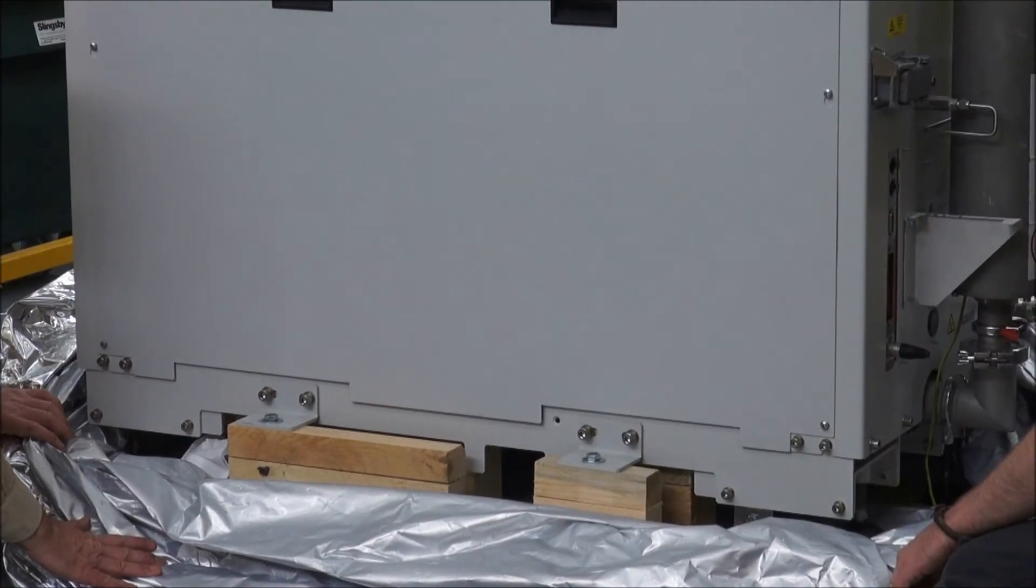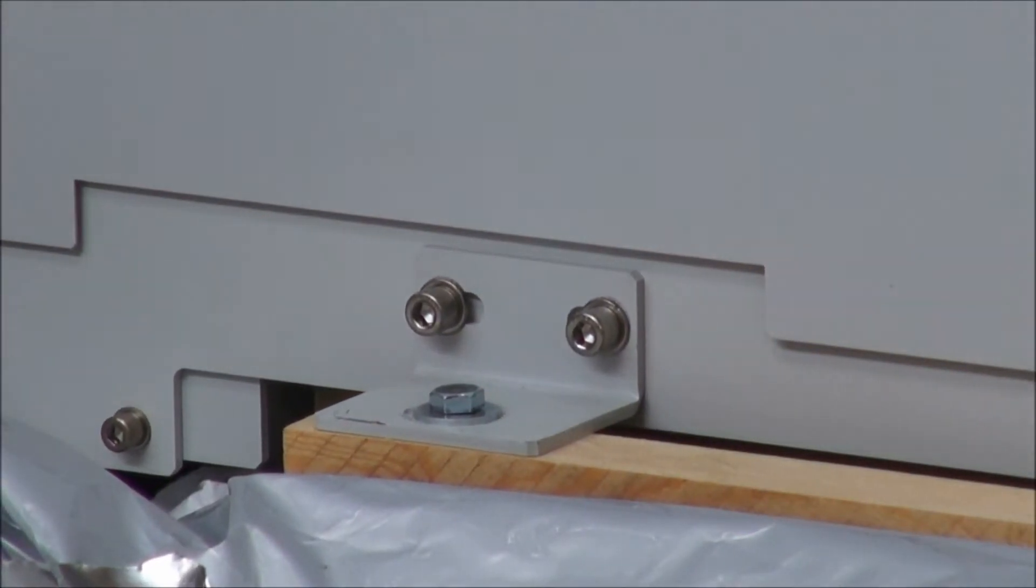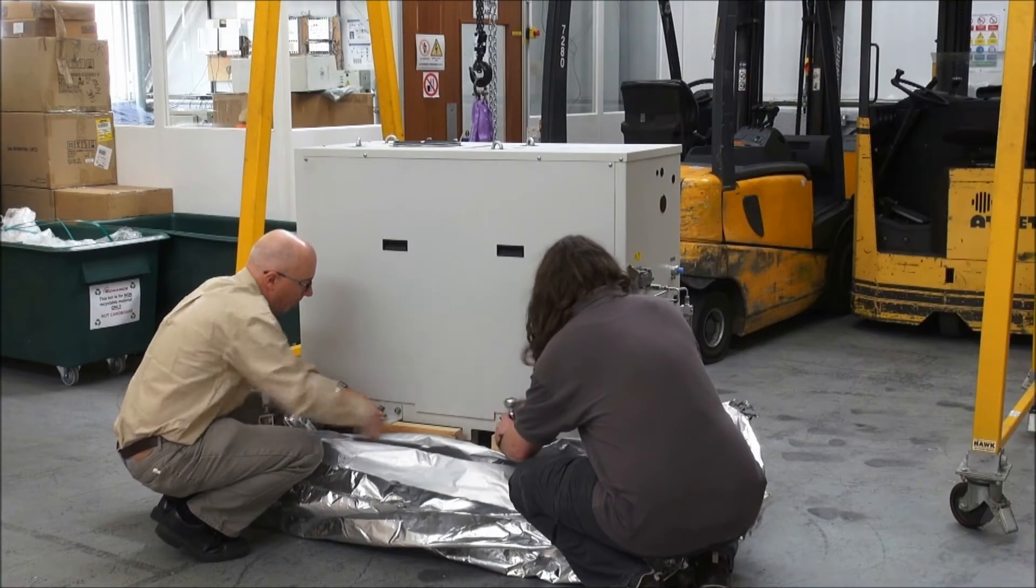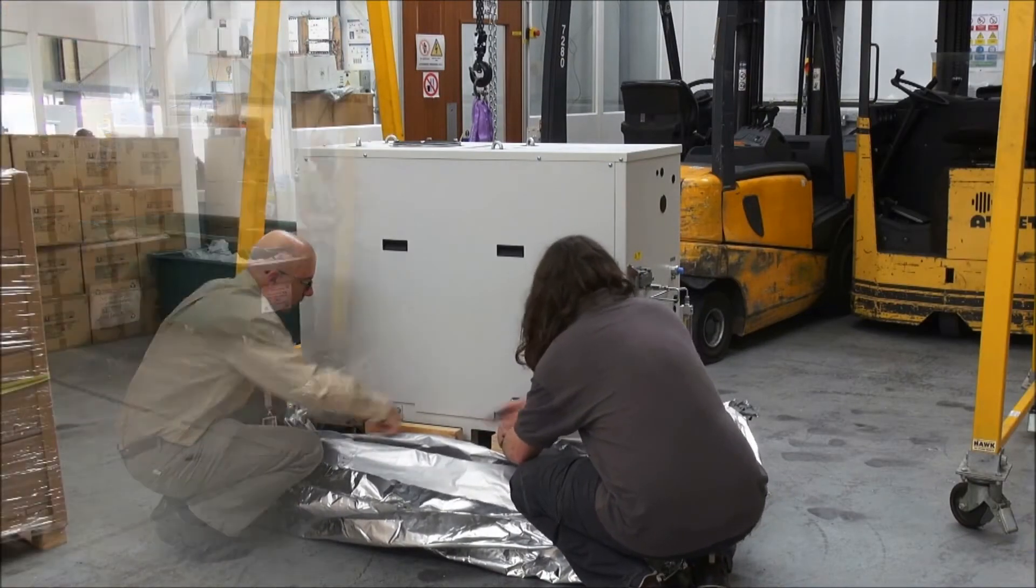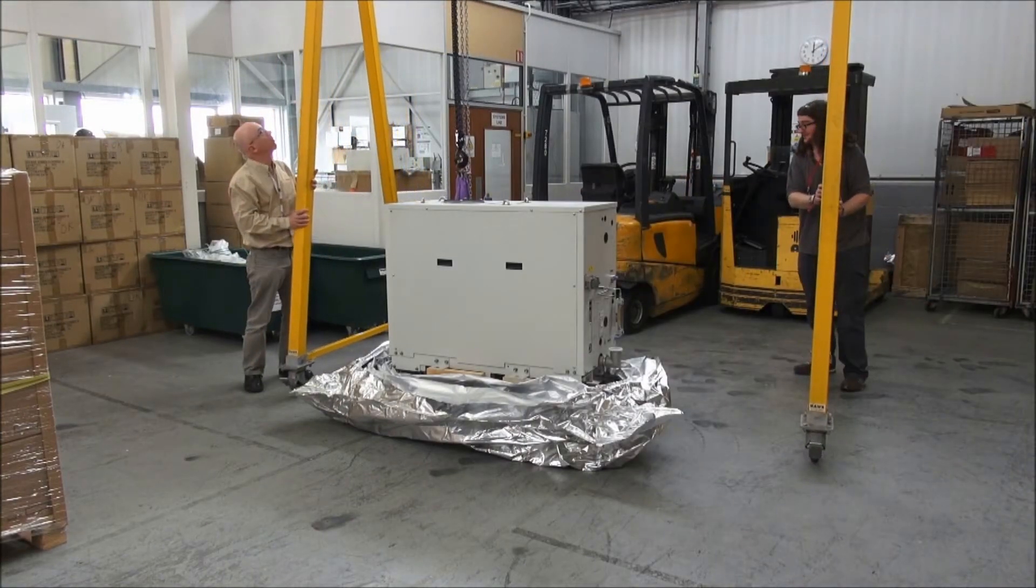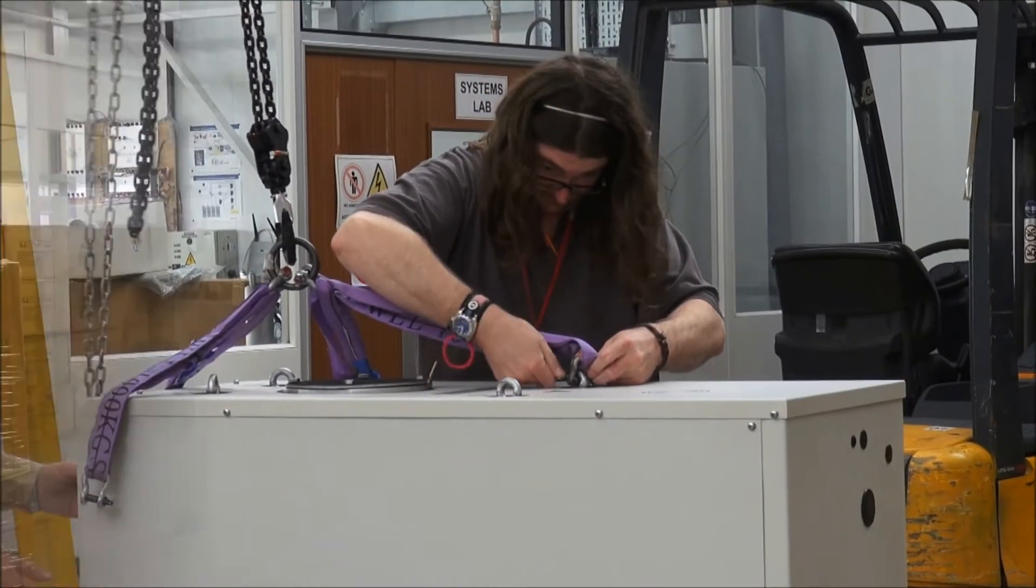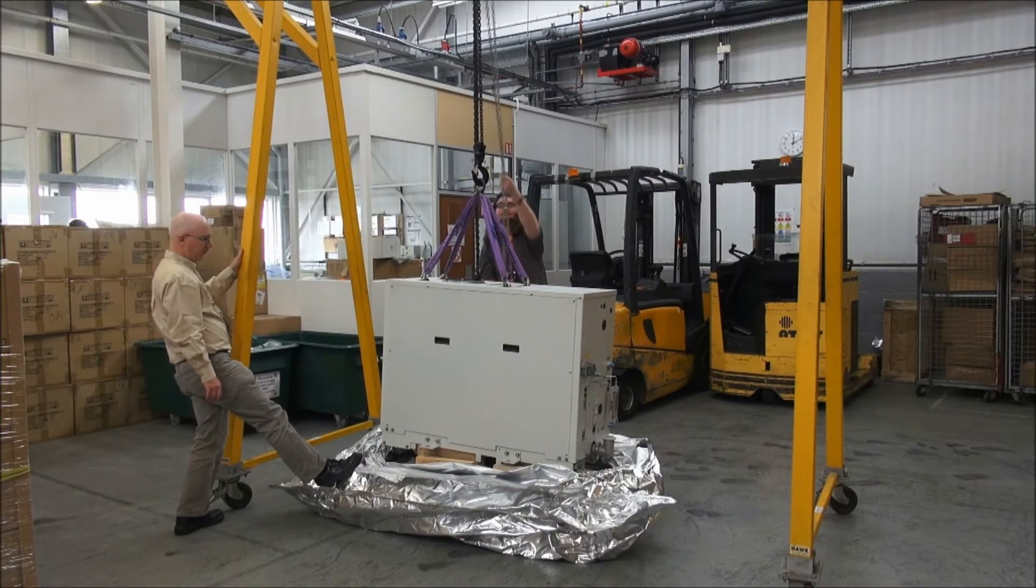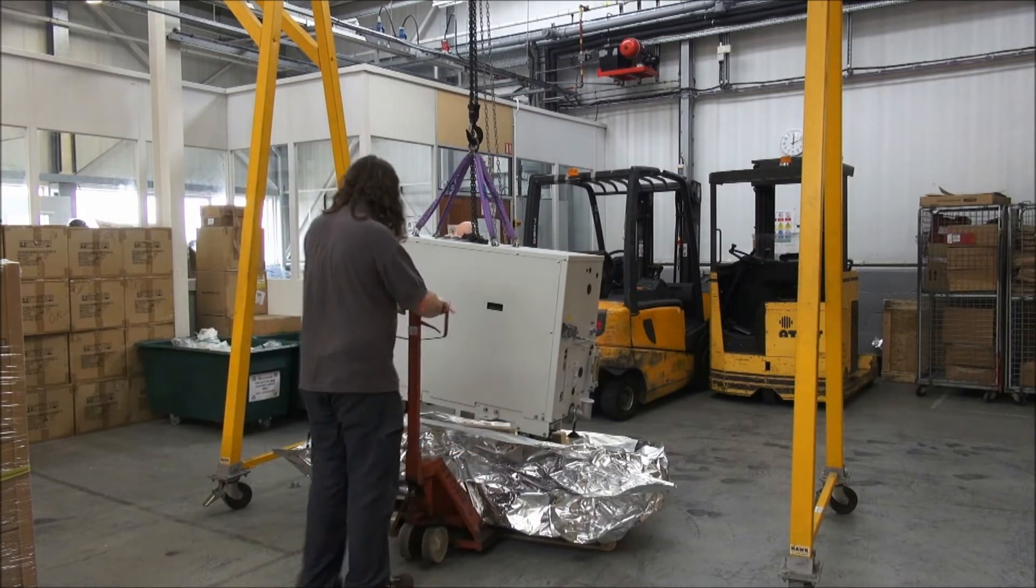The pump is held onto the base pallet with four large screws. Locate these and carefully remove them and keep them for any later use. Once the screws are removed, use suitable lifting gear to safely raise the pump clear of the base pallet and then move the pallet away.